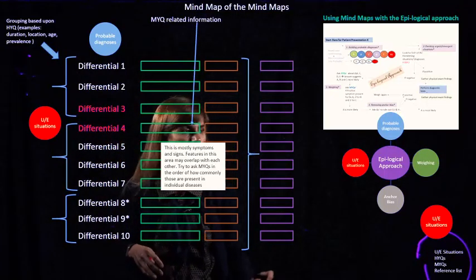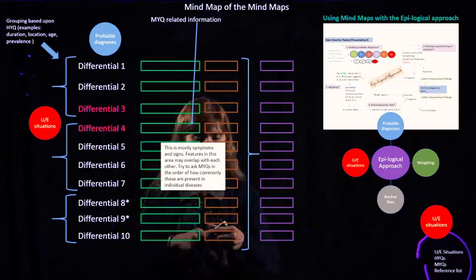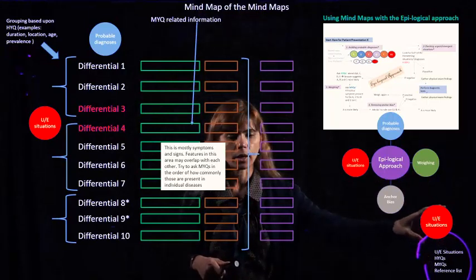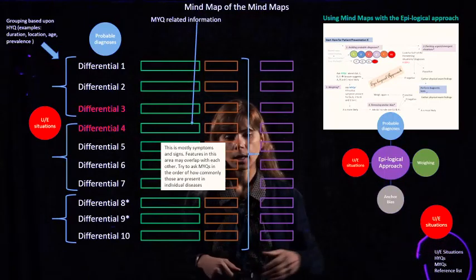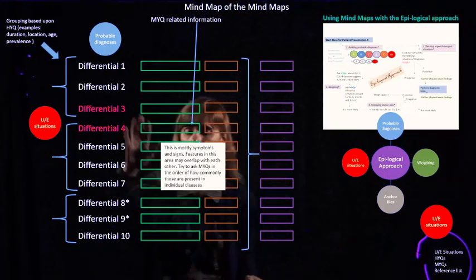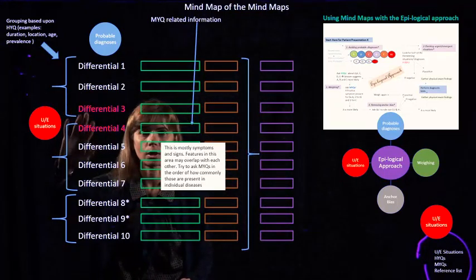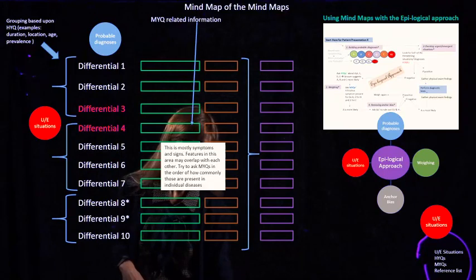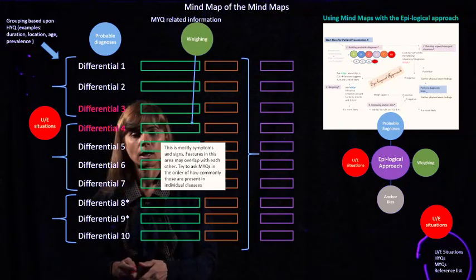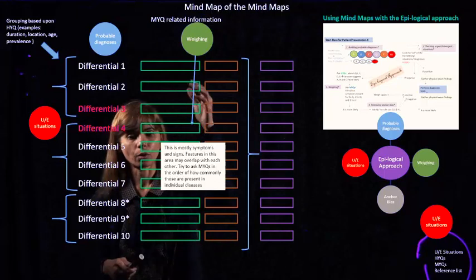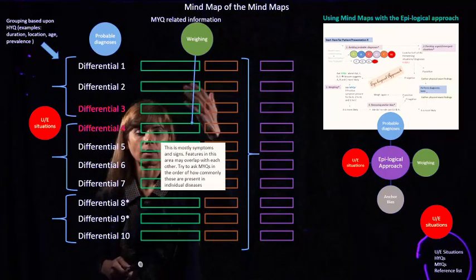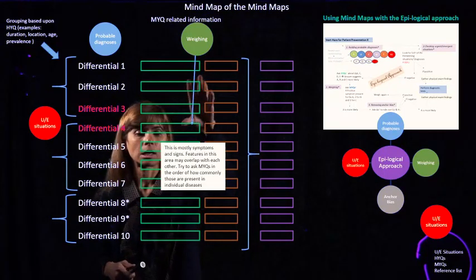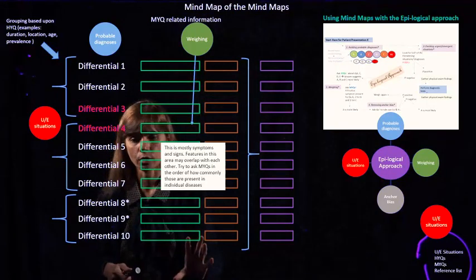The next step is making sure that there is no urgent or emergent situation or addressing that. You can see by looking at the patient's vital signs and appearance, we are addressing the second step. At the same time, we are trying to correlate that with the differential diagnosis in which those general emergent situations are going to be highly present. The next step is weighing. Weighing is basically figuring out which diagnosis is more likely versus less likely based upon the medium yield question related information that we are asking from the patient.